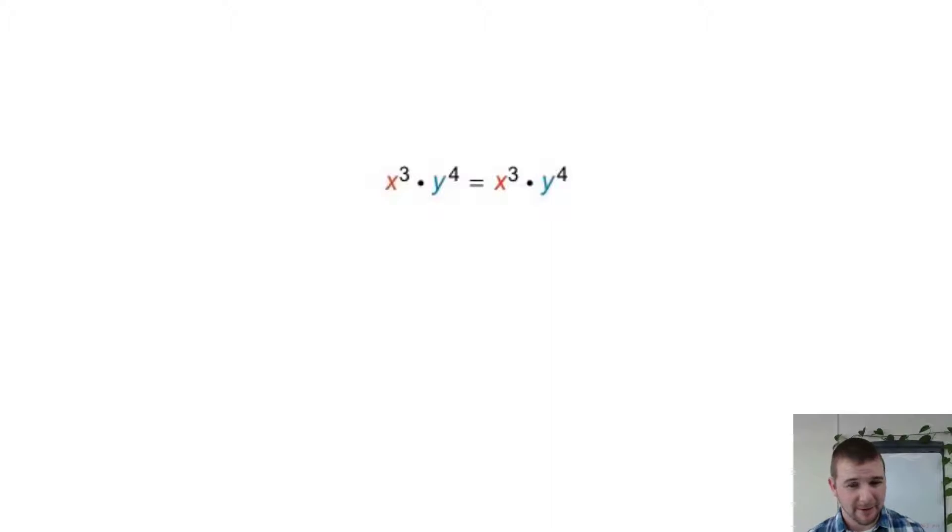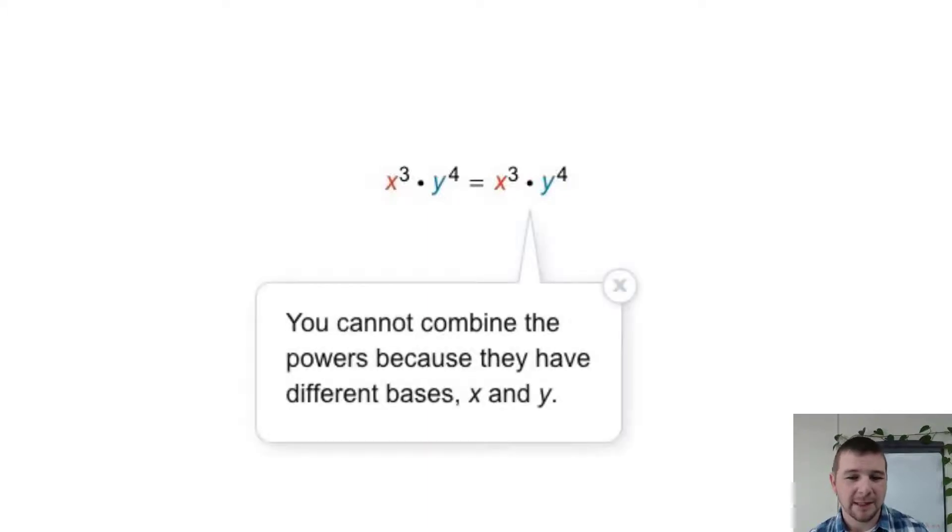x to the third power times y to the fourth power simply equals x to the third times y to the fourth. You cannot combine the powers because they have different bases, x and y.